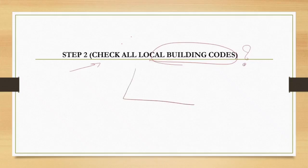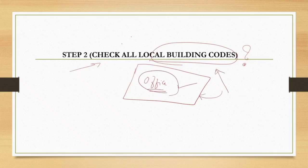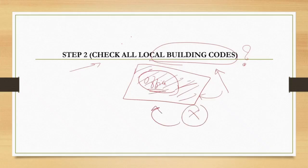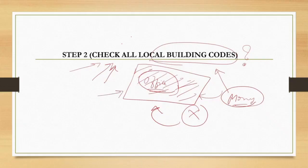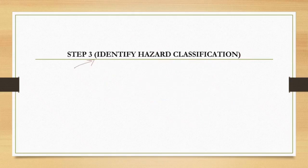After reviewing the architecture, we must check the local building codes. The code decides whether sprinklers are required or not for that specific building. In our case, we checked the building code and confirmed that a sprinkler system is required. In some scenarios, if the building code says sprinklers are not required and we still design them, it's simply a waste of money for the client.